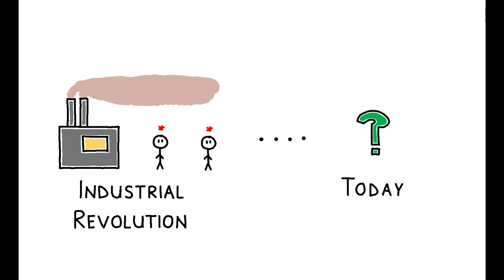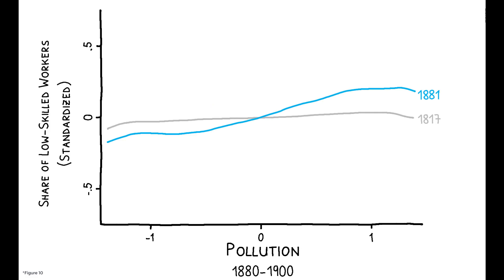What about the long-run impact? Remarkably, while there has been some reversion to the mean, these spatial inequalities have largely persisted up to the present day. The same 10th to 90th percentile difference in historical pollution explains a 16 percentage point gradient in neighborhood composition in 2011 and a 40% difference in property prices.